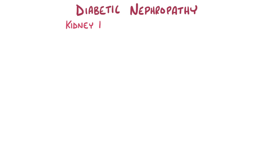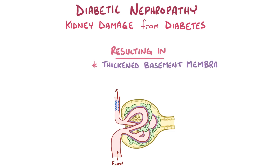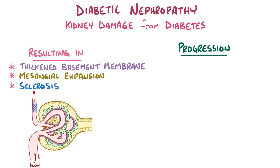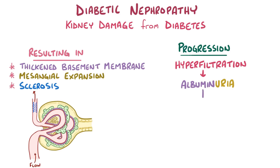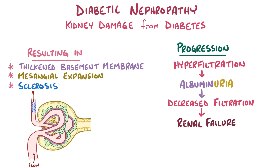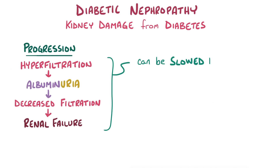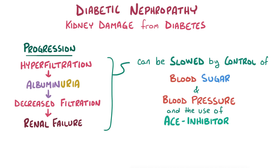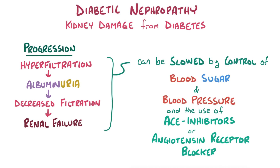As a quick recap: diabetic nephropathy is kidney damage caused by diabetes, resulting in glomerular basement membrane thickening, mesangial expansion, and sclerosis. An initial phase of increased glomerular filtration rate is followed by progressive albuminuria, then a gradual decline in glomerular filtration rate, and finally renal failure. This progression can be slowed by tight control of blood sugar and blood pressure, and the use of ACE inhibitors or angiotensin receptor blockers to decrease pressure within the glomerulus.